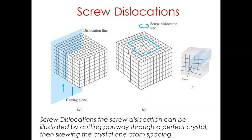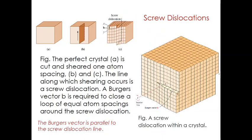A region of shear strain is created around the screw dislocation in which energy is stored. The slip or Burgers vector of the screw dislocation line is parallel to the dislocation line, whereas in the case of edge dislocation the Burgers vector was perpendicular to the dislocation line. In the figure, the perfect crystal is sheared and cut one atom spacing, producing a distortion. The line along which shearing occurs is the screw dislocation.